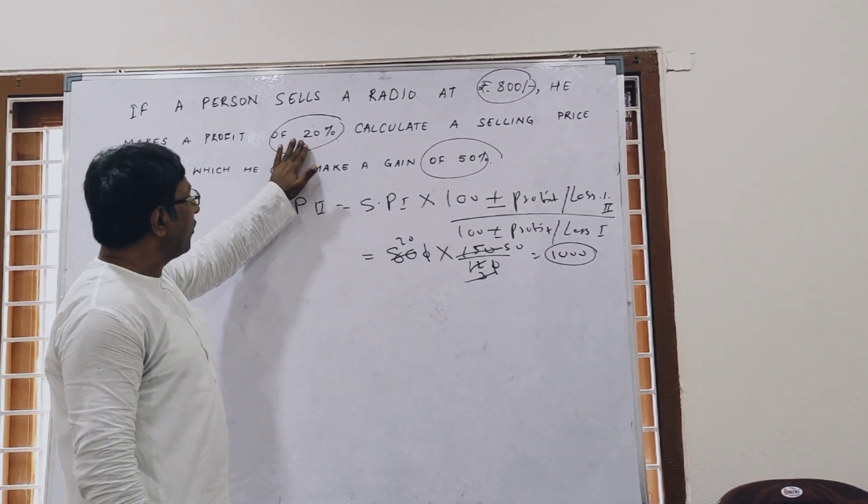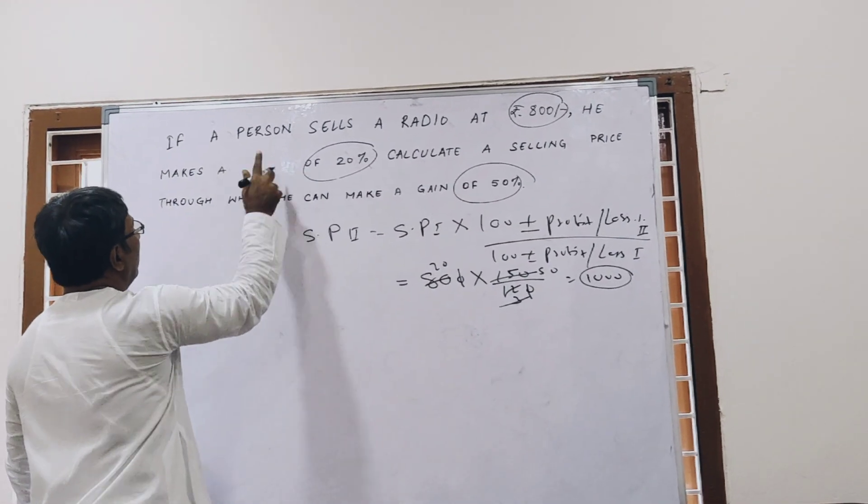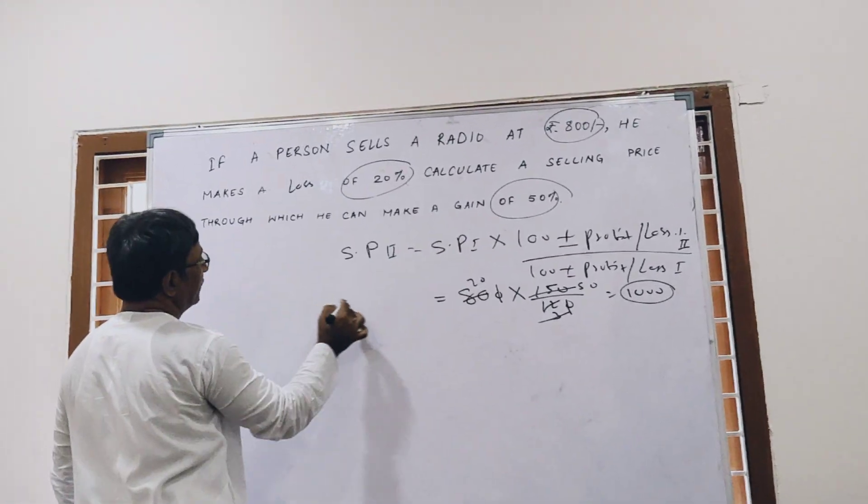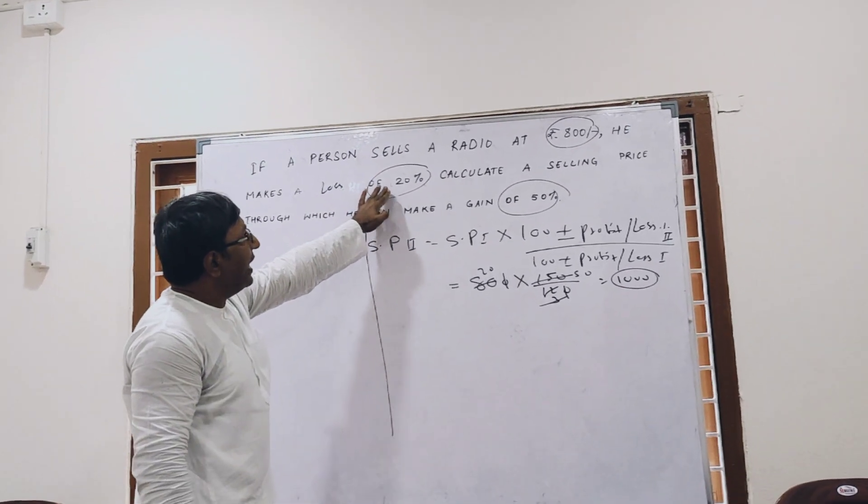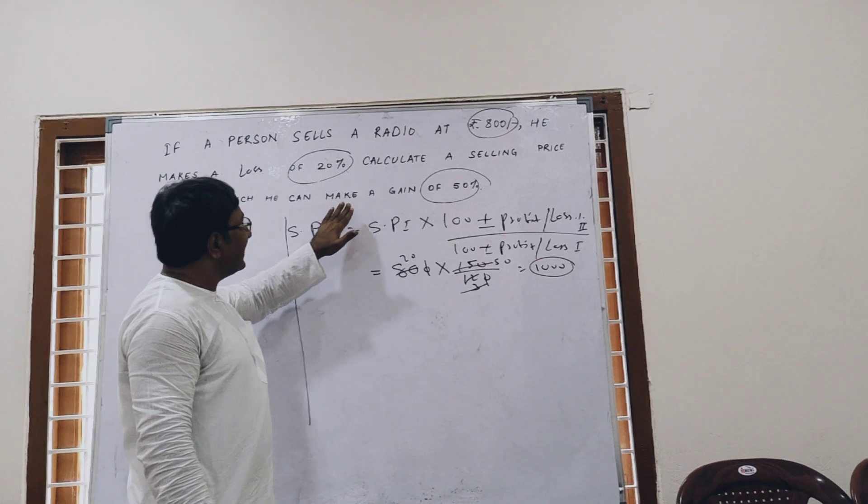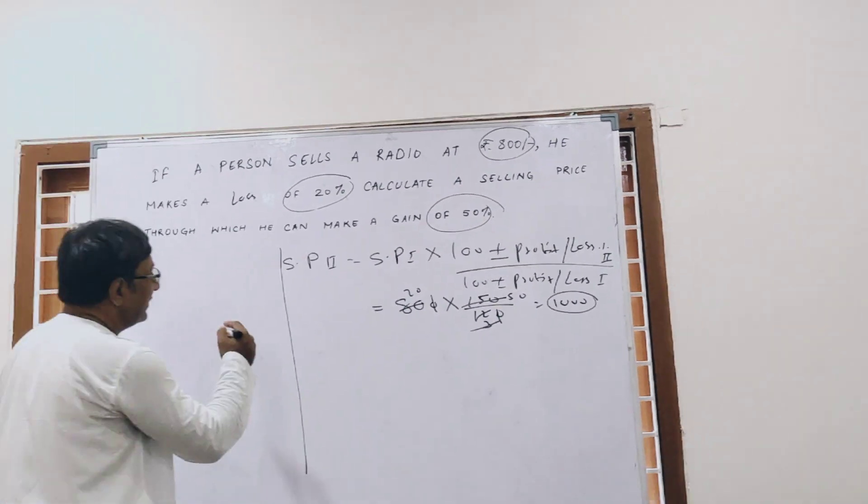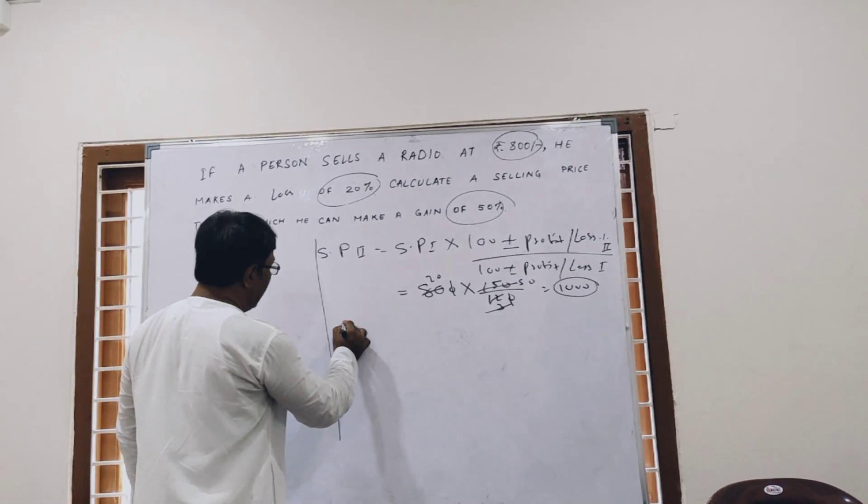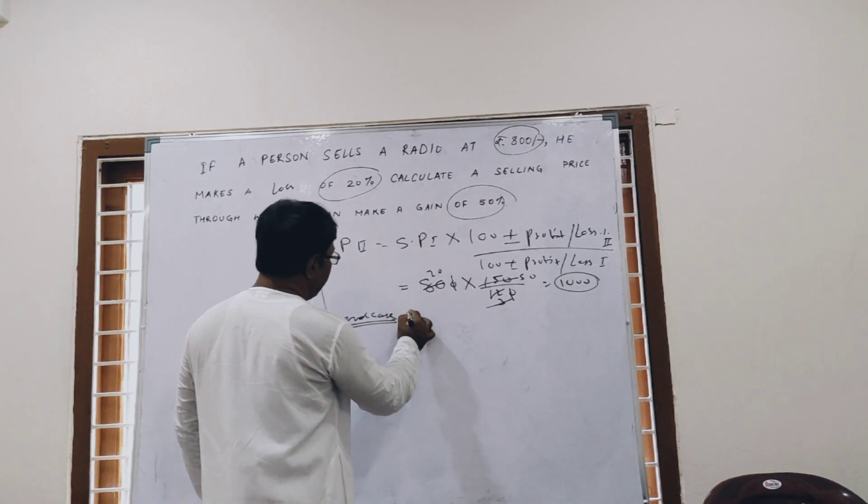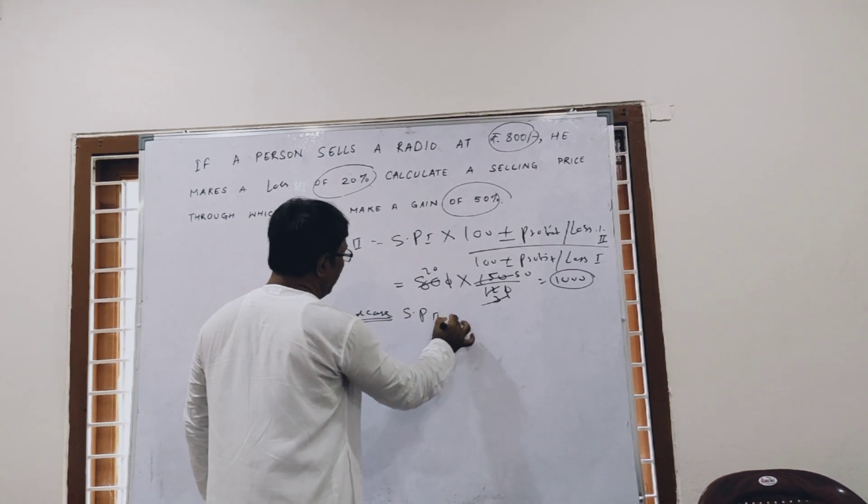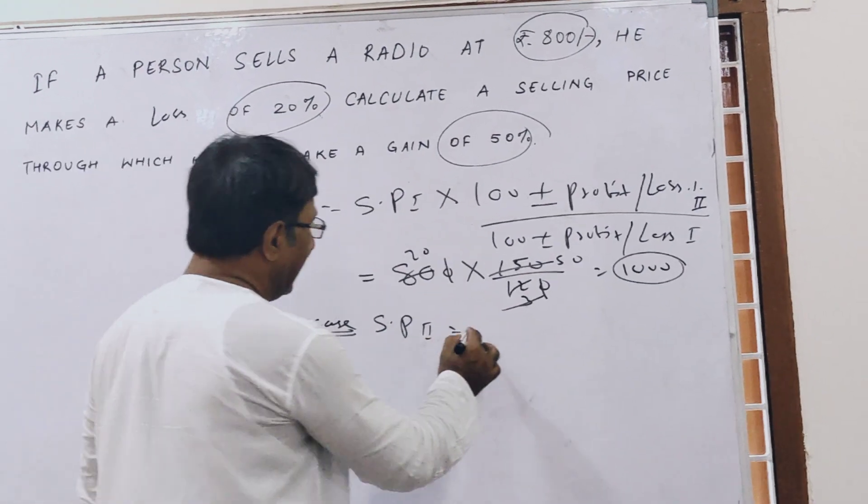Suppose this is a gain. Sometimes suppose the first is a loss. So if there is a loss of 20% and then we have to find selling price to gain 50%. In the second case, selling price second equals selling price first, that is 800.